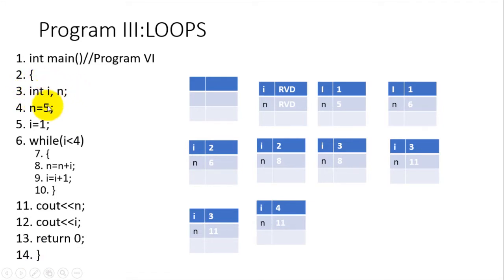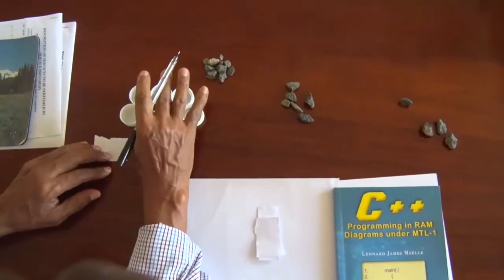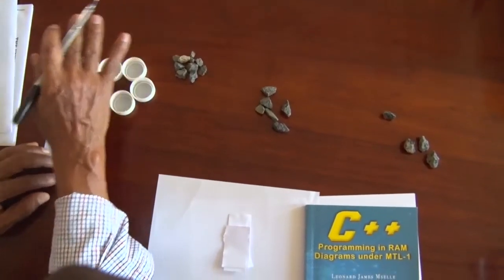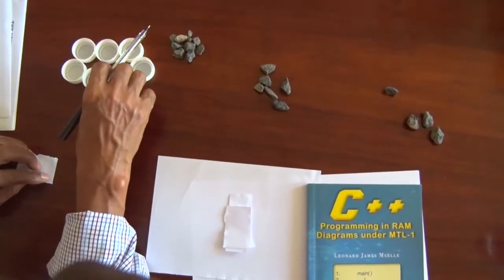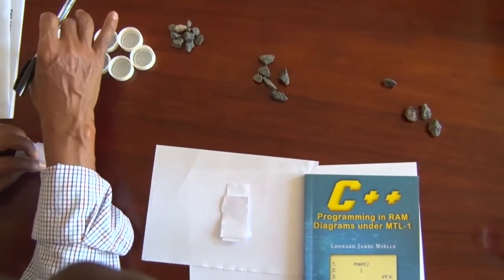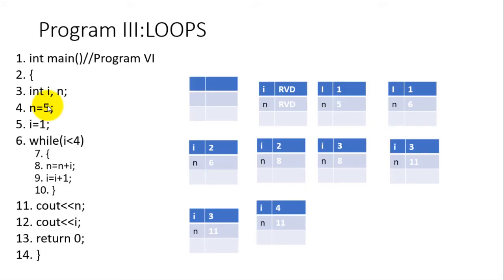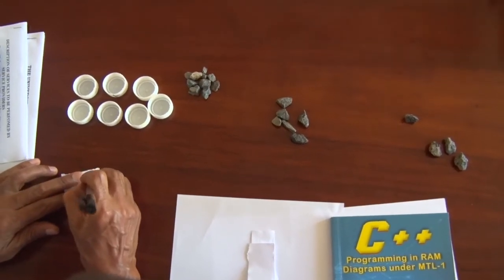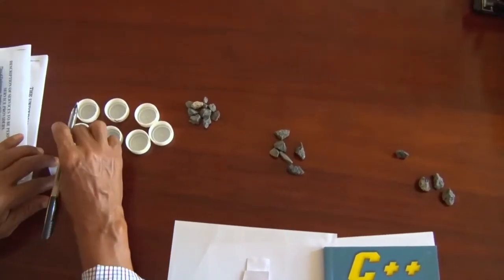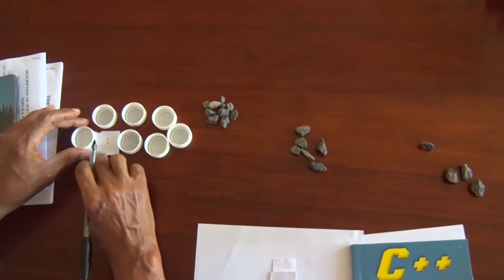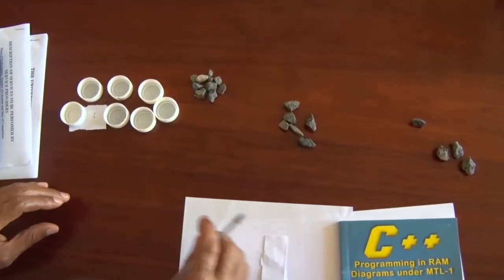Let us now use the physical model to understand int i and int n. As usual, this is the computer memory. Before running our program, the computer memory is empty. When it comes to line number 3, int i and int n, it means certain variables are labeled as i and n.